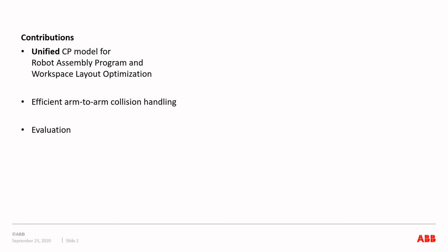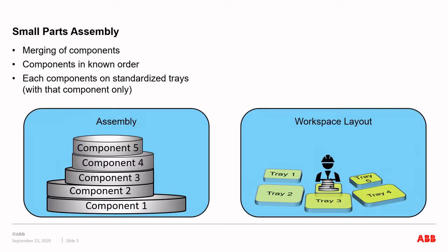I would like to start by presenting the contribution of the paper. We developed a model that captures high-level aspects of robot assembly programs as well as the layout of the workspace, optimizing these aspects jointly. A key part is an efficient arm-to-arm collision model. A typical application is electronics assembly such as a cell phone. Today, cell phones are designed for simple assembly with parts easily merging without glue, screws, or soldering. The design of the product fully determines the order of merging components onto the growing assembly. The components are presented on trays, each tray holding one component type. This is almost always done by humans in low-wage countries since setting up robot installations is expensive, and this cost needs to be covered by relatively few products as smaller product series is the trend.